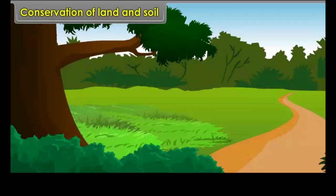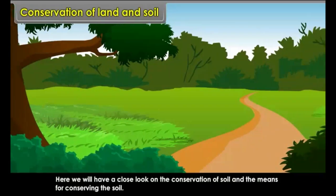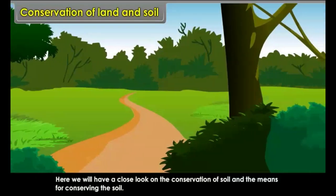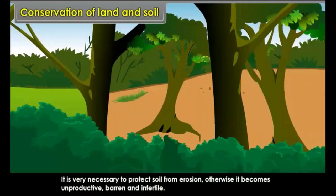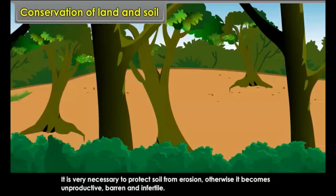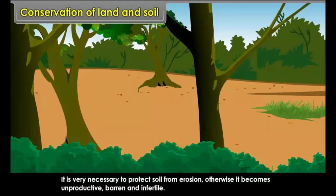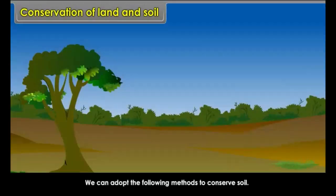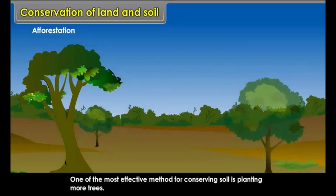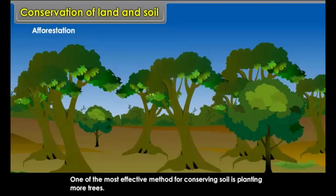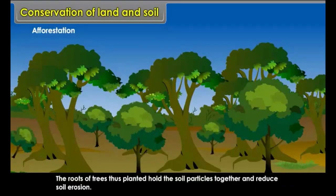Conservation of land and soil. It is very necessary to protect soil from erosion; otherwise it becomes unproductive, barren, and infertile. We can adopt the following methods to conserve soil. Afforestation — one of the most effective methods for conserving soil is planting more trees. The roots of trees thus planted hold the soil particles together and reduce soil erosion.